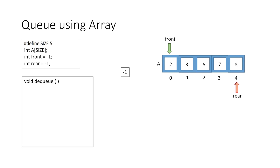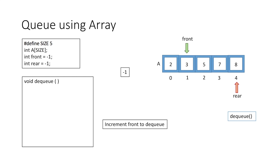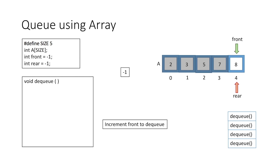Now let's see how we can dequeue or remove an element from the queue. We can remove elements only from the front. When we perform the dequeue operation we simply increment front by 1, moving front to the next element. This means the queue now starts at index 1 and we have removed element 2. If we further dequeue, we increment front again, removing element 3. Performing dequeue again removes 5 and then 7. Now we have only one element left in the queue, which is 8, and if we remove this last element the queue becomes empty.